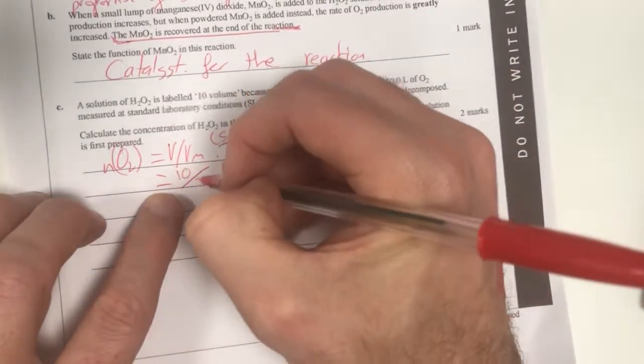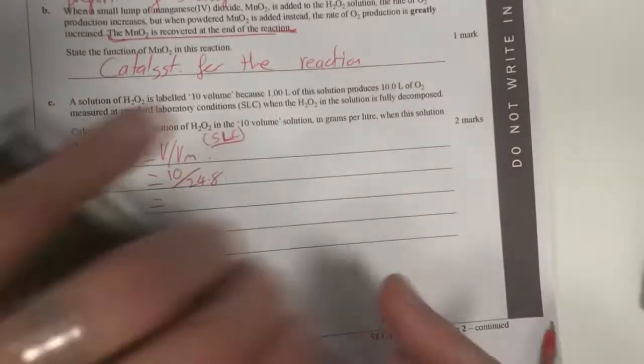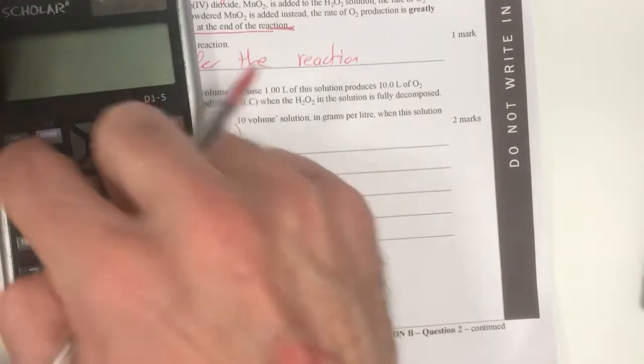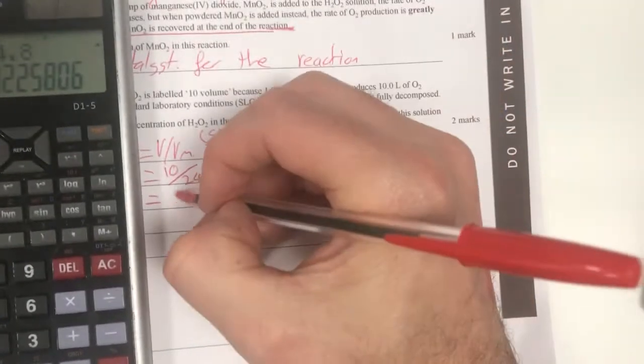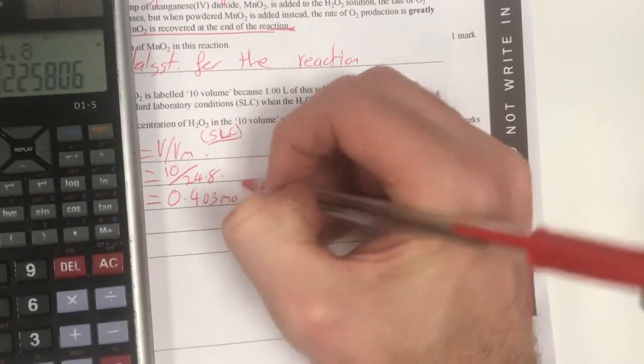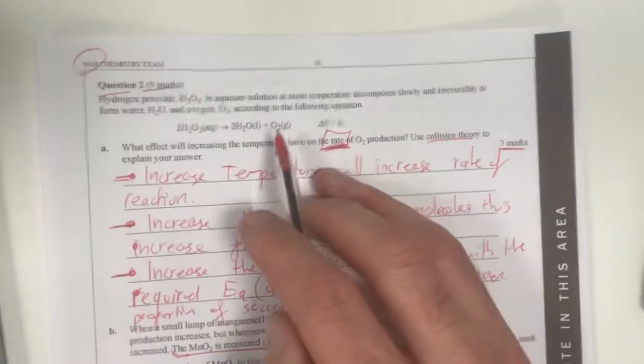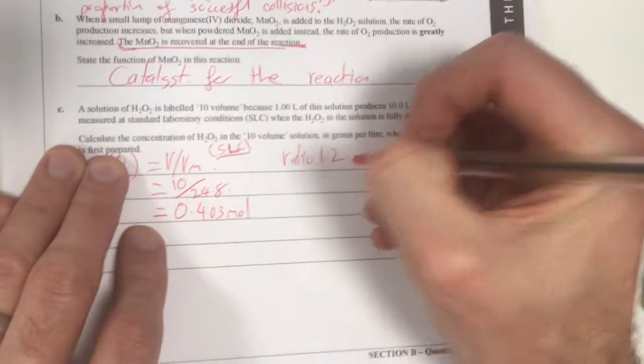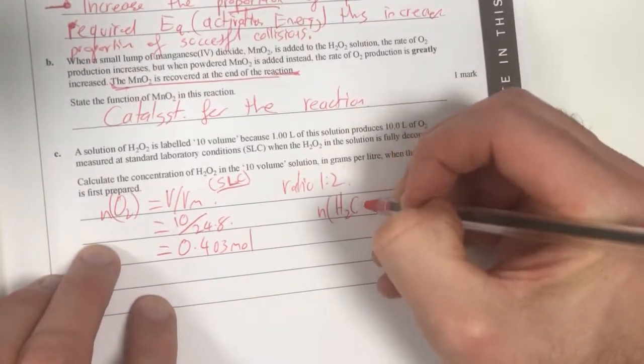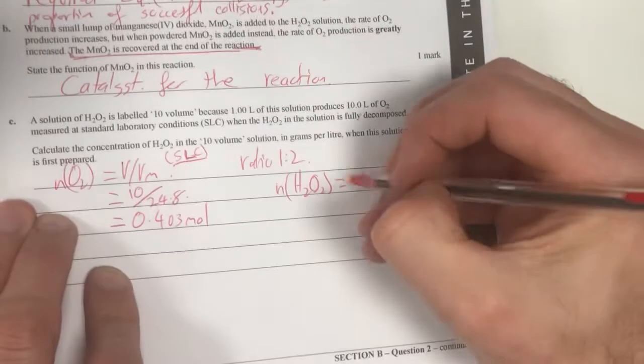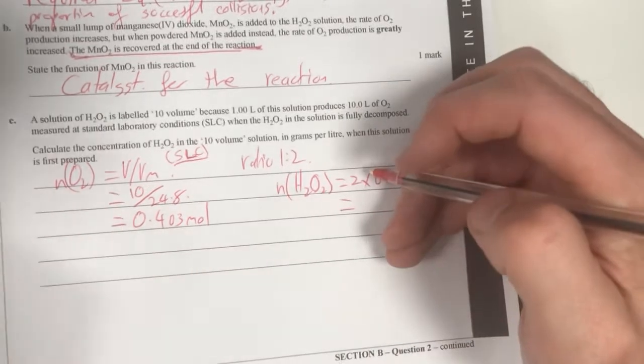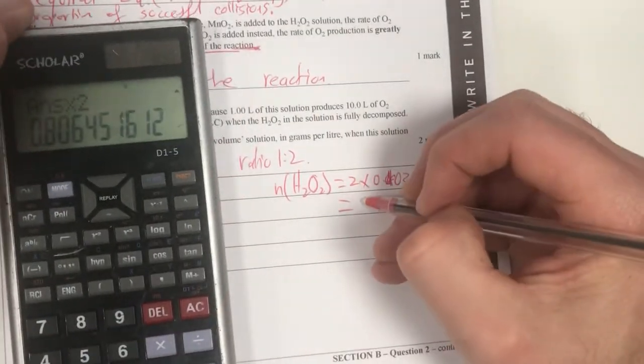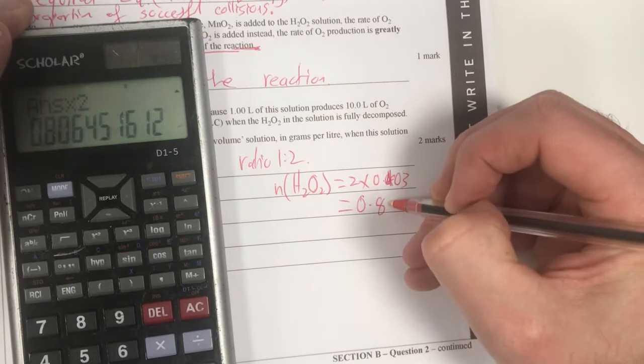So my number of moles of O₂ gas is going to be equal to V divided by VM, which is standard laboratory conditions. 10 divided by 24.8 is going to be equal to 0.403 mole of oxygen gas. From knowing this I can then look at my ratio, so it's a ratio of 1 to 2.